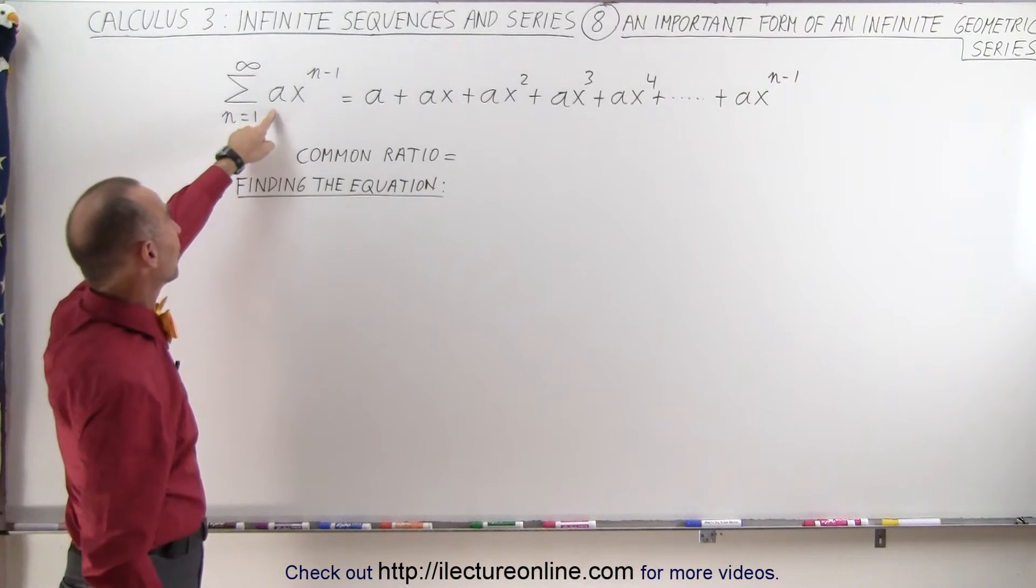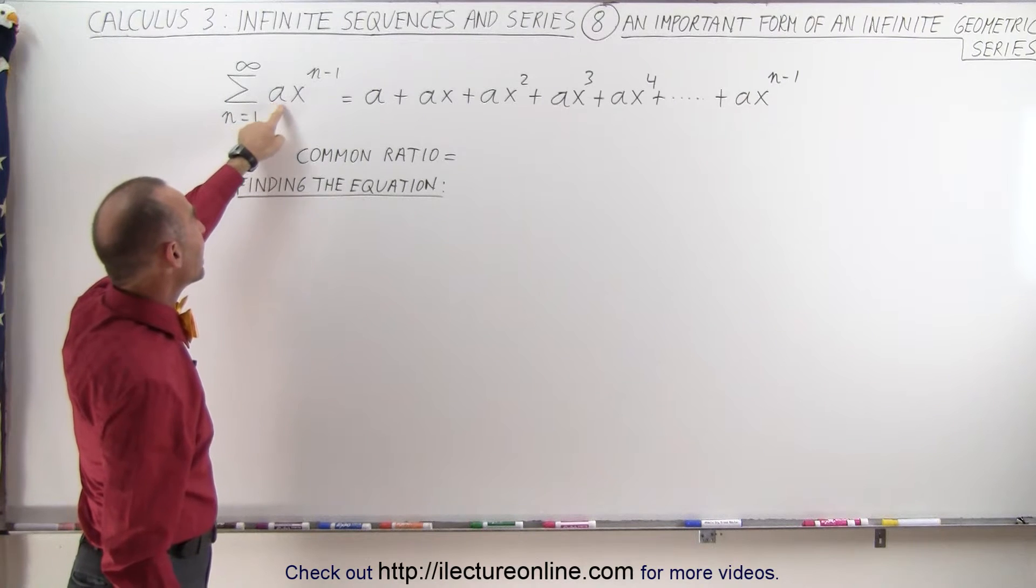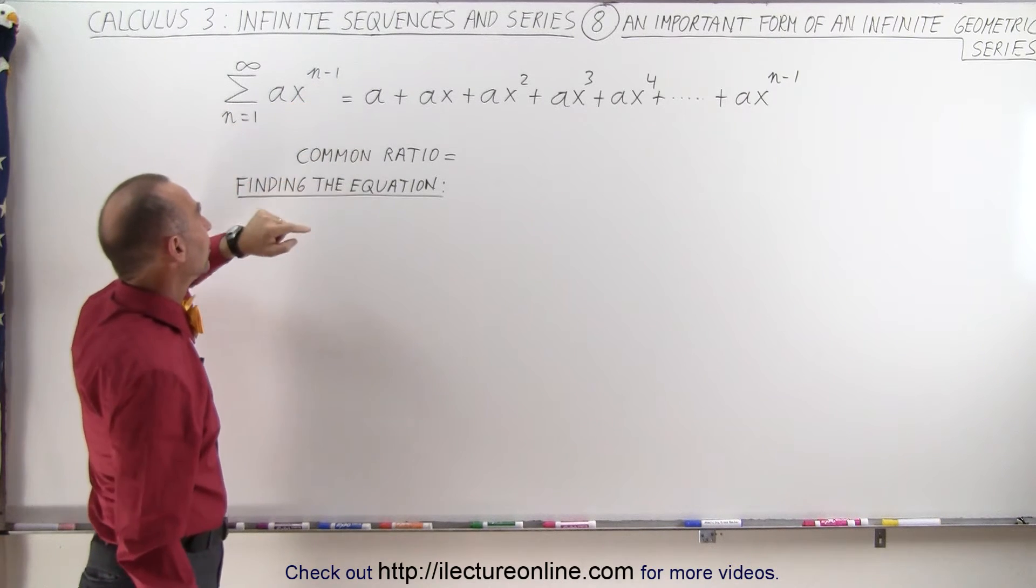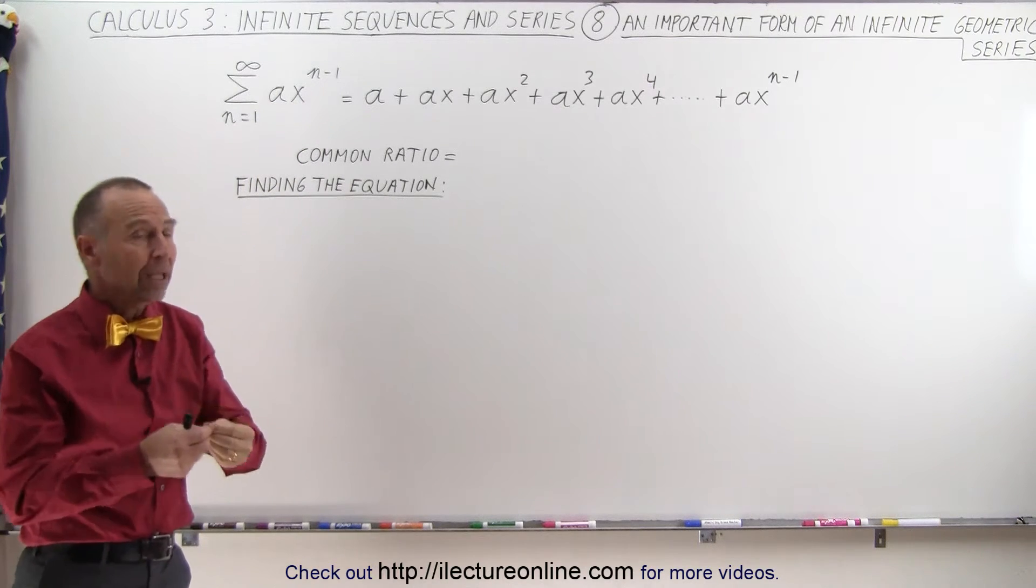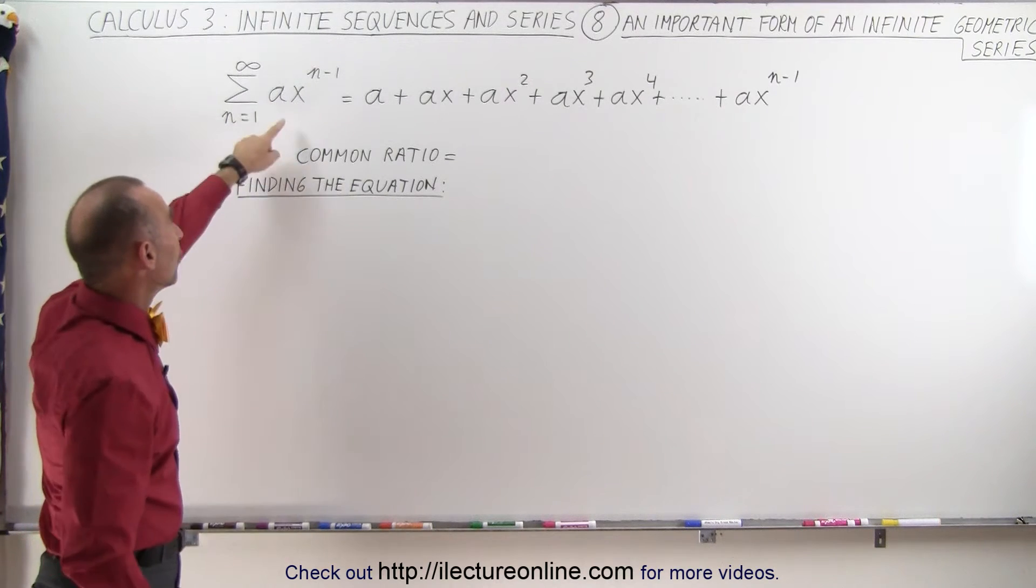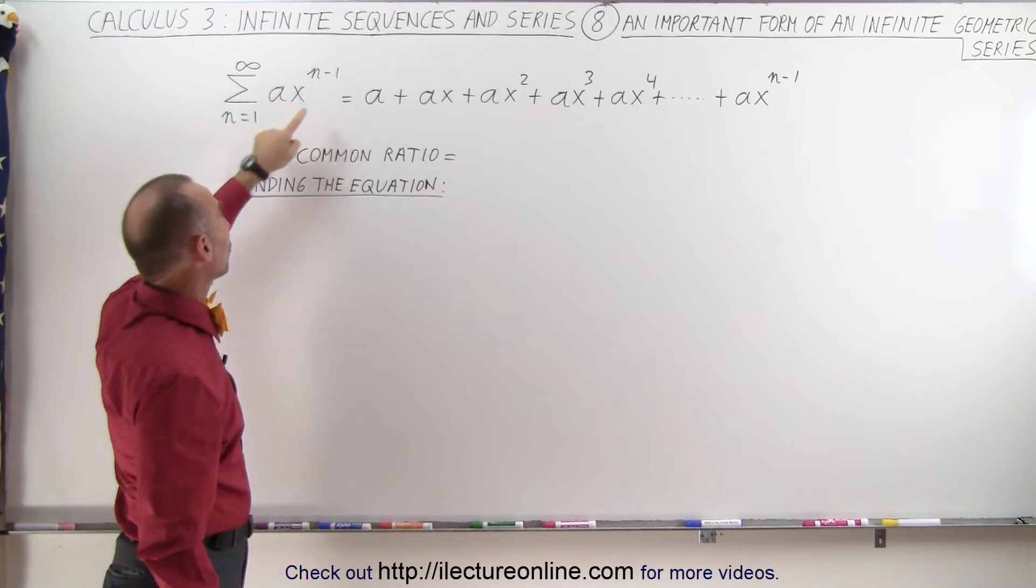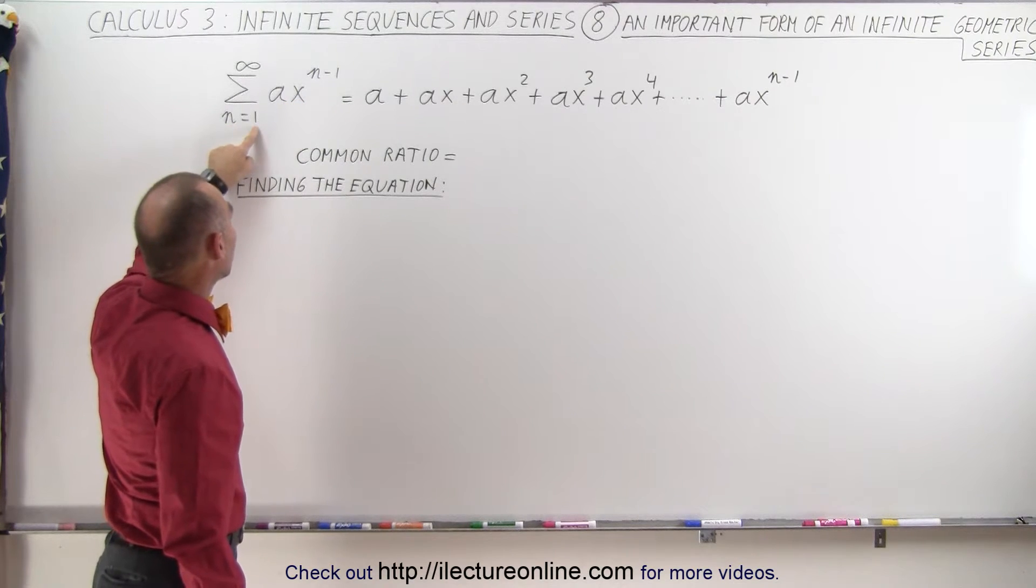It's the infinite series or infinite sum of a times x to the n minus 1, a being some sort of constant and x being the number associated with a value raised to an exponent n minus 1 as n goes from 1 to infinity.